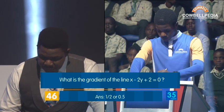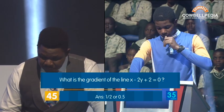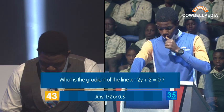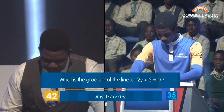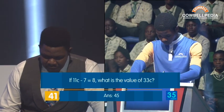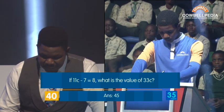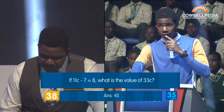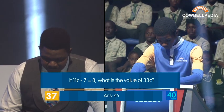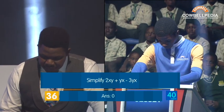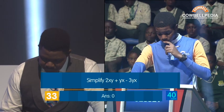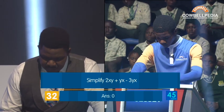What is the gradient of the line X minus 2Y plus 2 equals 0? Minus 1 over 2. Incorrect. If 11C minus 7 equals 8, what is the value? — 5. Correct. Simplify 2XY plus YX minus 3YX. 0. Correct.